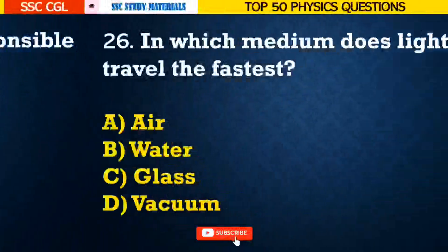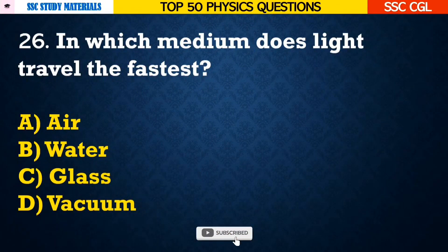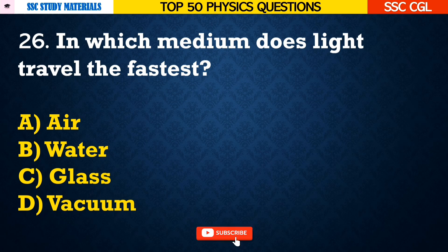Question number 26: In which medium does light travel the fastest? — Answer D. Vacuum.